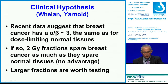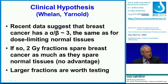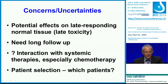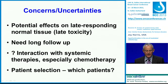But recent data suggests that breast cancer — and prostate cancer as well — has an alpha-beta ratio of about 3, which is actually the same as it is for dose-limiting normal tissues. And if so, 2 gray per day spares breast cancer as much as it spares normal tissue. So there's no advantage, and both Tim Whelan and John Yarnold were led to believe that larger fractions are worth testing. Of course, in going to larger fractions, we're concerned about potential effects on late-responding normal tissue and late toxicity. So we need substantial long follow-up, and there were concerns about interaction with systemic therapy, particularly chemotherapy, and lots of discussion about for whom this approach is indicated.